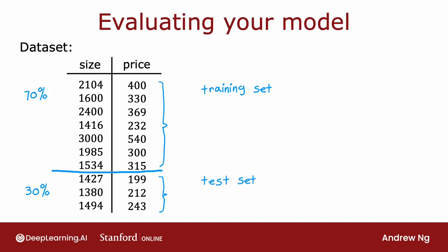And what we're going to do is train the model's parameters on the training set, on this first 70% or so of the data, and then we'll test its performance on this test set. In notation, I'm going to use x1, y1, same as before, to denote the training examples through xm, ym, except that now to make explicit. So in this little example, we would have seven training examples. And to introduce one new piece of notation, I'm going to use m subscript train. m train is the number of training examples, which in this small dataset is seven. So the subscript train just emphasizes if we're looking at the training set portion of the data.